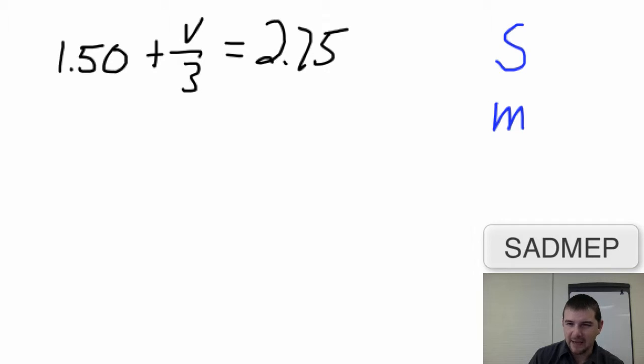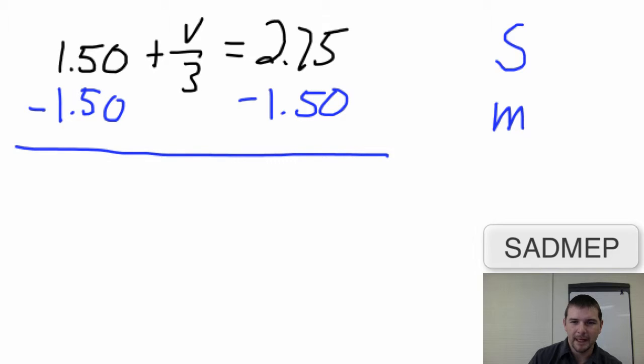Now considering SADMEP, the S comes first, and so that's a good indicator that we should subtract. In this case, $1.50 from both sides of the equation. Being sure to keep everything lined up and only subtracting values from like terms. $1.50 minus $1.50 cancels. That's why we're doing this in the first place.